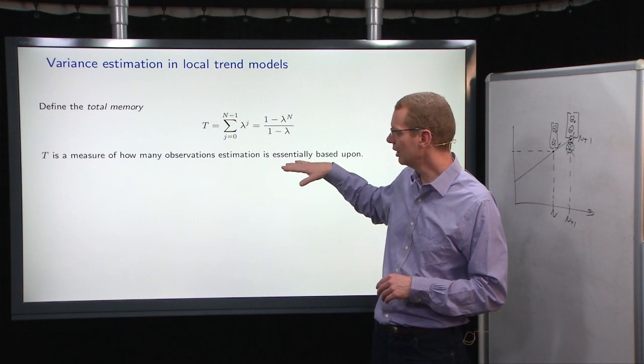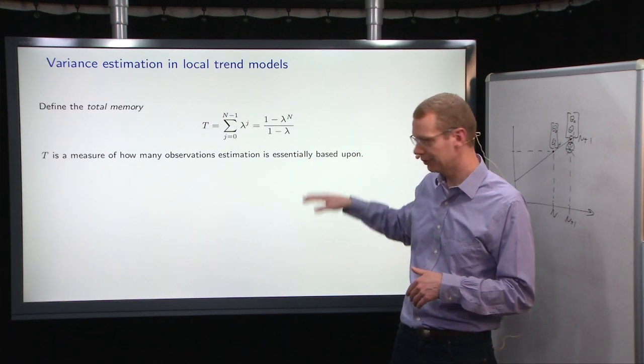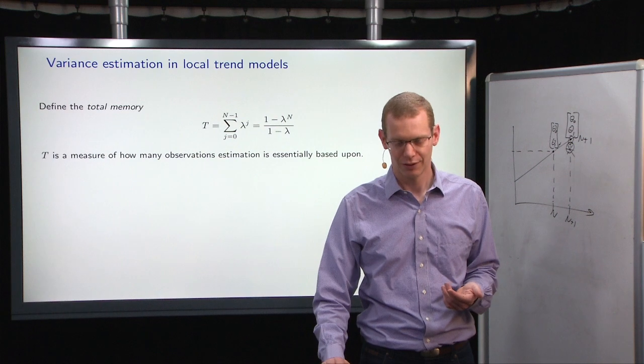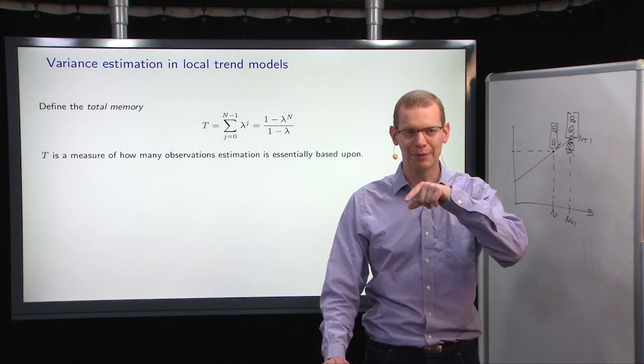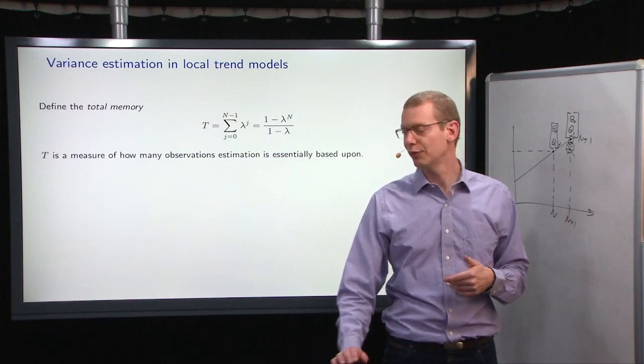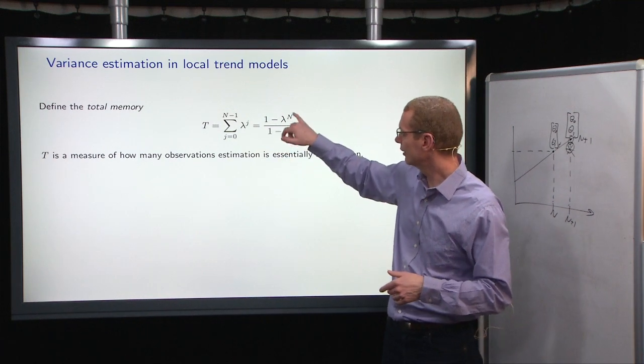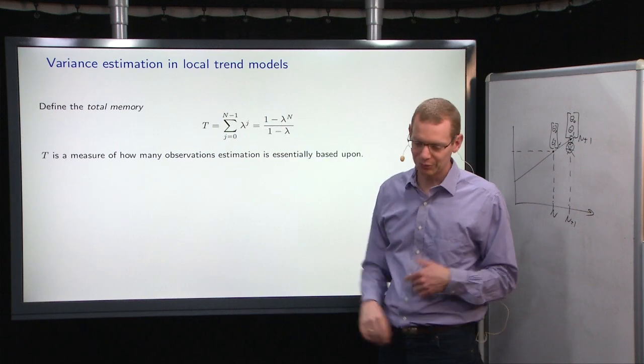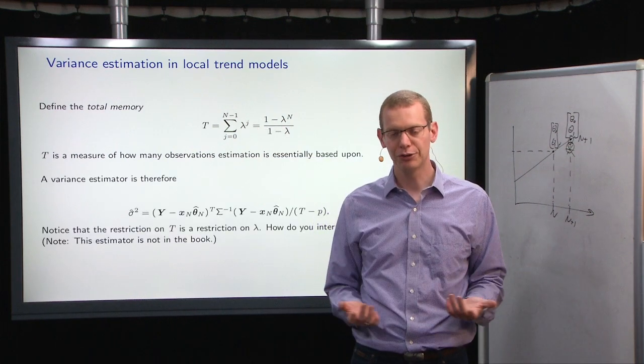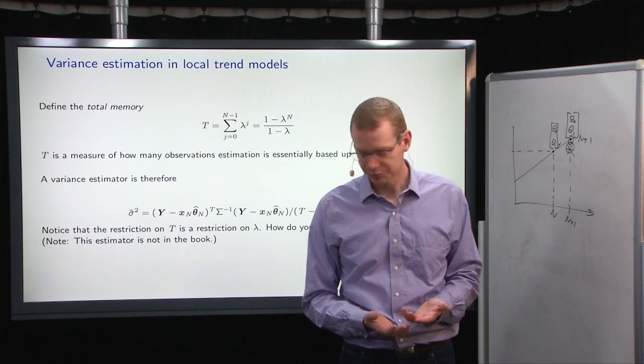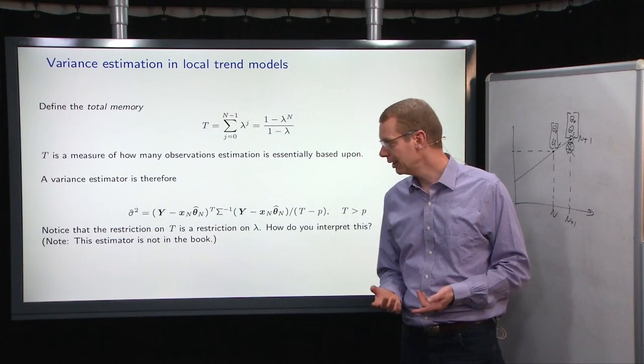So it's a measure of how many observations we essentially use in our modeling, where we previously just used lambda equals to 1, and therefore, if you calculate this, it becomes n. So we also need to do a variance estimator, and there are many ways of doing this.